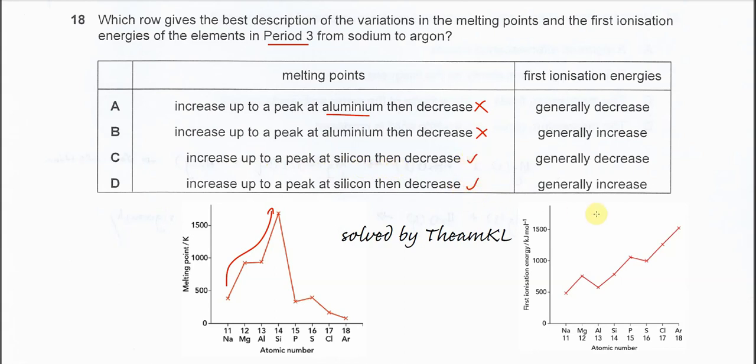Now first ionization energy either generally decreases or increases. So the first IE is controlled by mostly two factors: the proton number and the shielding effects.